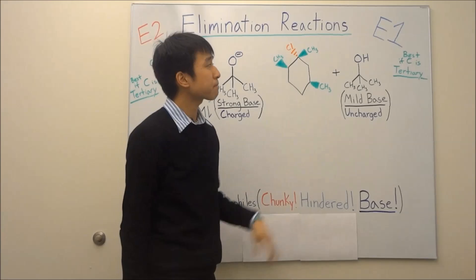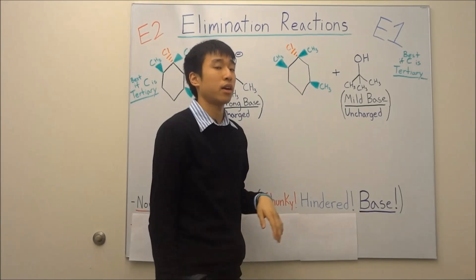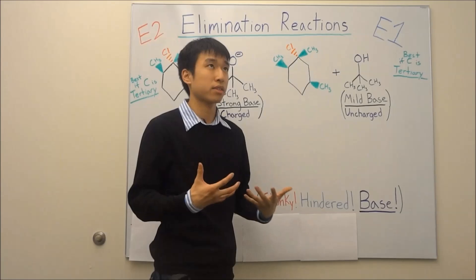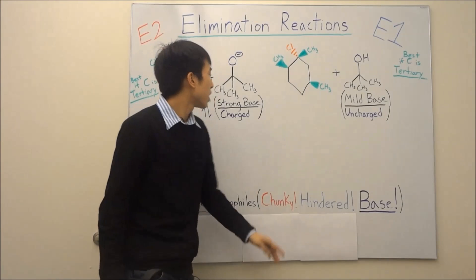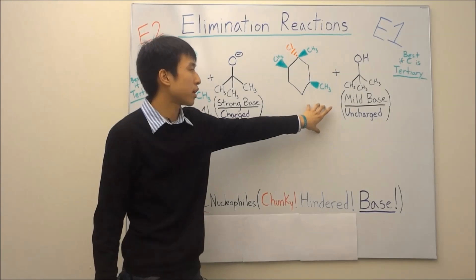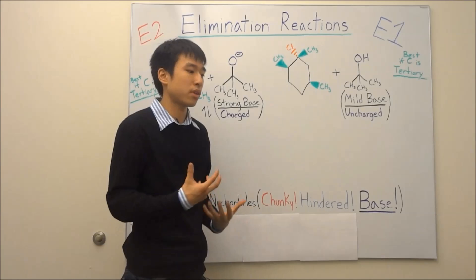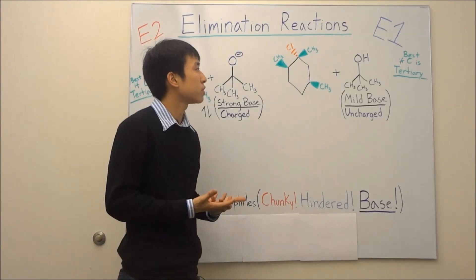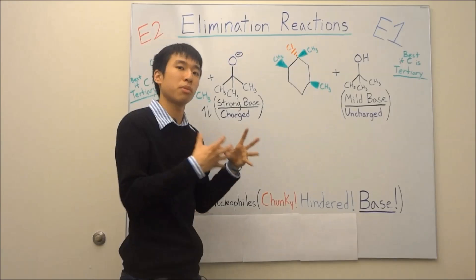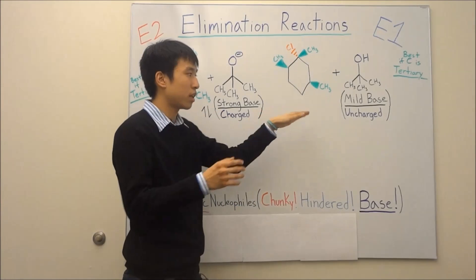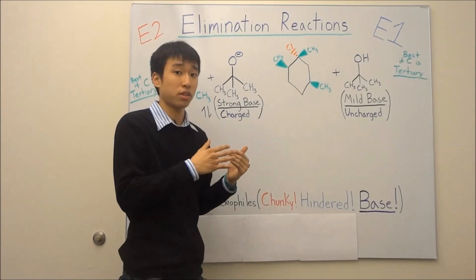And then for E1, once again, it's best if the carbon is tertiary, so right here. And then only one molecule is going to have an effect on how fast the reaction occurs, and that molecule is going to be just the leaving group, because our nucleophile, in this case here, it's a mild base. So a mild base isn't going to have the ability or the power to kick the reaction into a gear and get it going. So you have to wait for your leaving group to leave first and make your molecule unstable, and then your nucleophile, it's going to be like a base now, it's going to do its job and try and stabilize your molecule.